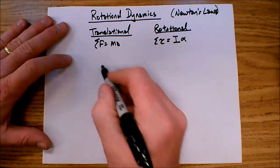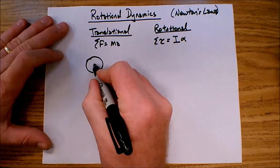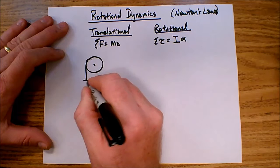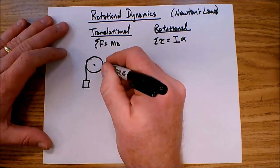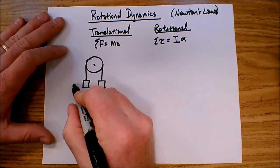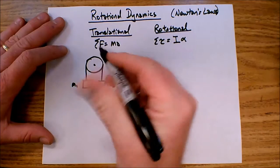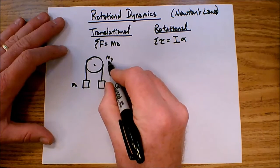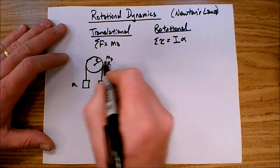So let's take a look at an example problem, an Atwood's machine, pretty classic example. So here I have a pulley, and let's just say I've got a mass here and I've got a mass here. We'll call this M1 and we'll call this M2, and I've got the pulley. The pulley has a mass, we'll call that MP, mass of the pulley, and a radius of the pulley of R.